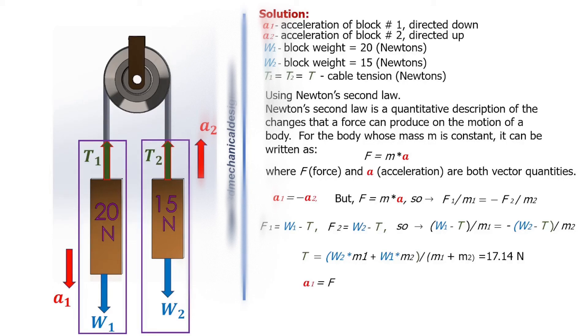a1 equals F divided by m1, equals W1 minus T divided by W1 divided by 9.81, equals 1.4 meters per second squared.